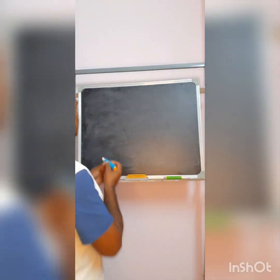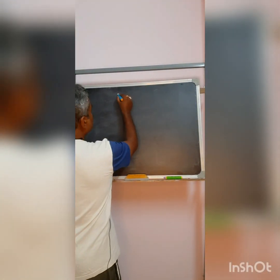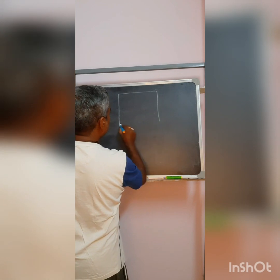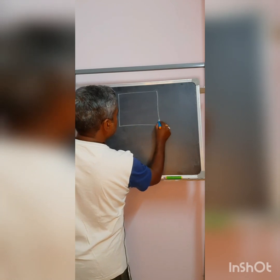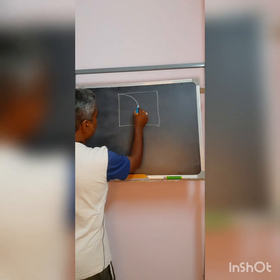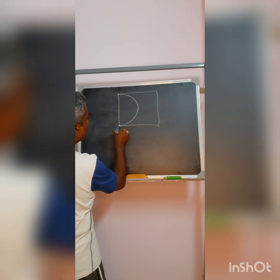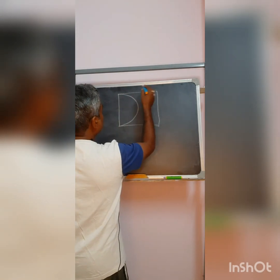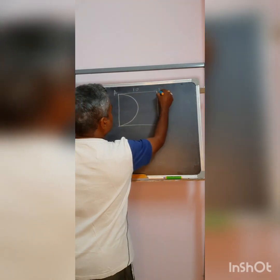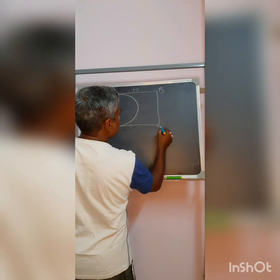Good evening friends, let us start with the geometrical problem first. The problem says there is a square of arm length 10 and a half circle being drawn taking one arm of the square — this is 10. Let us say this is A, B, C and D.